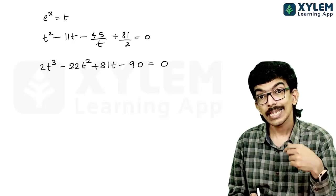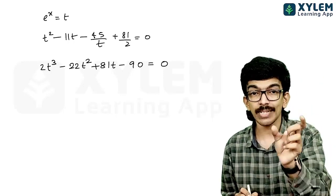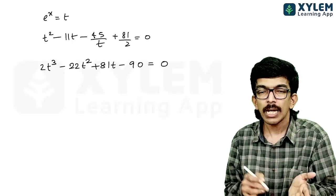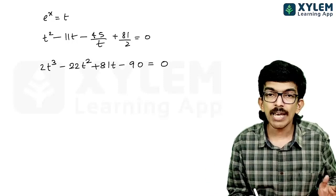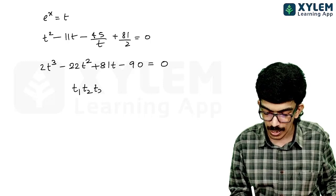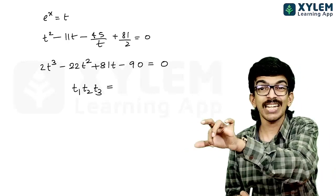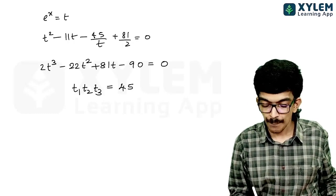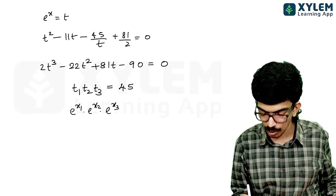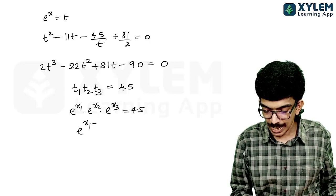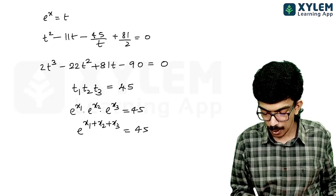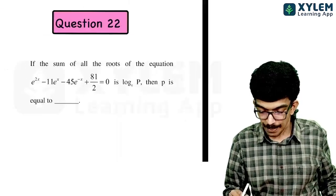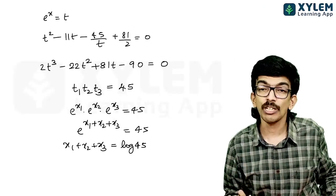Looking at the product of roots t₁·t₂·t₃ for this cubic: by Vieta's formulas it equals -(-90)/2 = 45. Since t₁·t₂·t₃ = e^(x₁)·e^(x₂)·e^(x₃) = e^(x₁+x₂+x₃) = 45, we get x₁+x₂+x₃ = log 45. Since this equals log p, the answer appears to be p = 45.